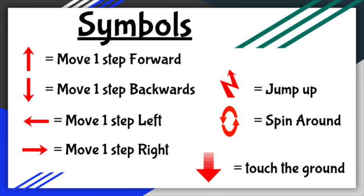These are the symbols and the movements we're going to use today in the game. An up and down arrow means to move forward or backwards, a left and right arrow mean to move left or right, the lightning bolt means to jump up, the arrows going in a circle means to spin around, and the last one simply touch the ground.